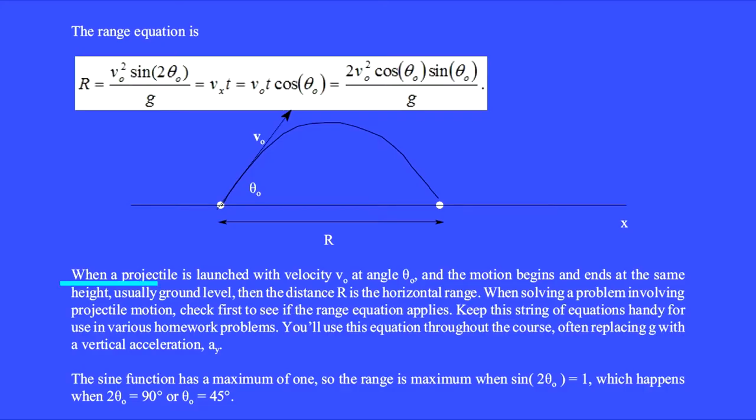When a projectile is launched with velocity v₀ at angle θ₀ and the motion begins and ends at the same height, usually ground level, then the distance R is the horizontal range. When solving a problem involving projectile motion, check first to see if the range equation applies. Keep this string of equations handy for use in various homework problems.